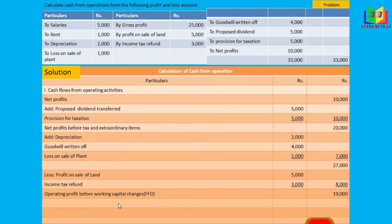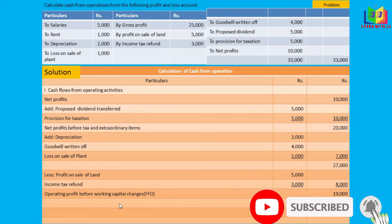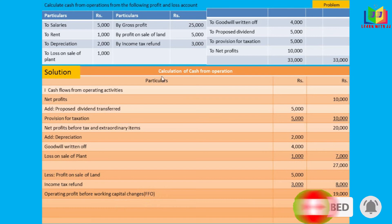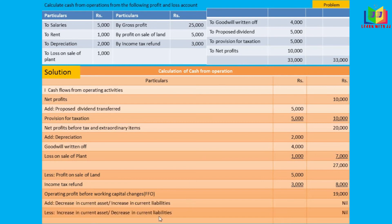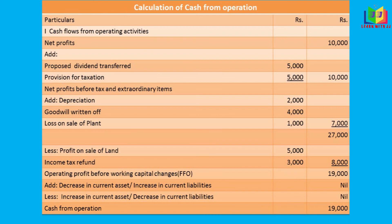Now we subtract any increase in current assets and decrease in current liabilities, and add any decrease in current assets and increase in current liabilities — but all of these are nil in this problem. So the funds from operations equals the cash from operations, which is 19,000.